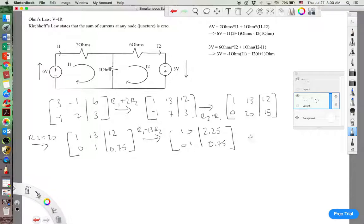And so I1 equals 2.25 amps, and I2 equals 0.75 amps. And we can check that with our original equations up here. 6 is equal to 2 times I1, 4.5 plus 1.5. That checks out.